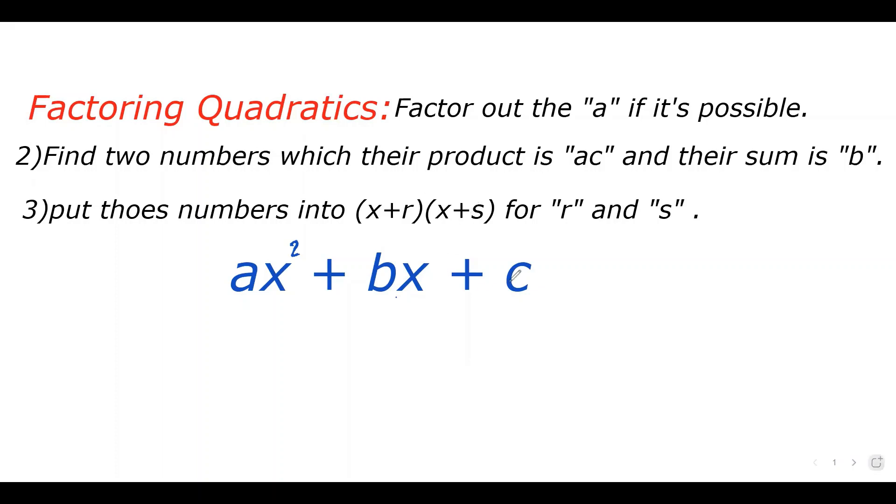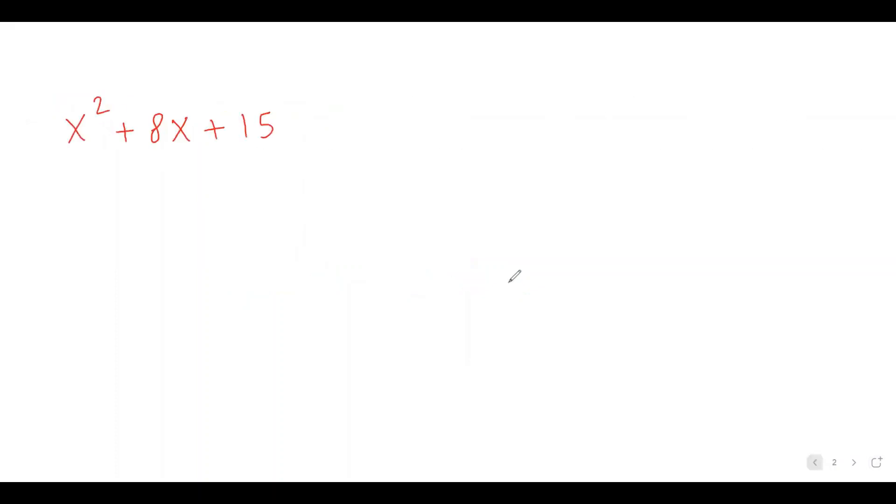Let's do our examples. Here is the first one. x squared plus 8x plus 15. So my a value is 1, my b value is 8, my c value is 15. In this case, my a value is 1, so I don't need to factor it out.